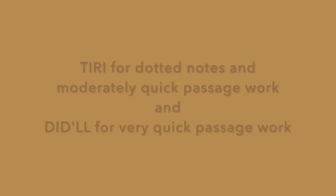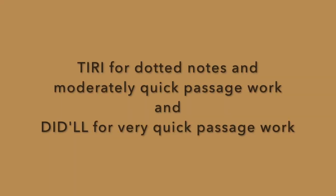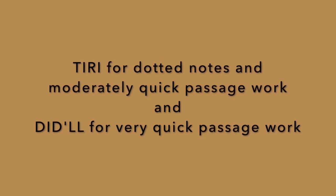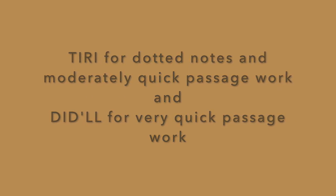Section One, Part Nine. In quick passage work, the single tongue does not have a good effect, since it makes all the notes alike, and to conform with good taste, they must be a little unequal. Thus, the other two ways of using the tongue may be employed: Tiri for dotted notes and moderately quick passage work, and Diddle for very quick passage work.